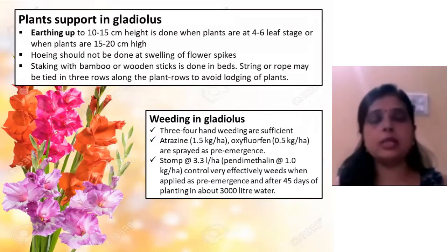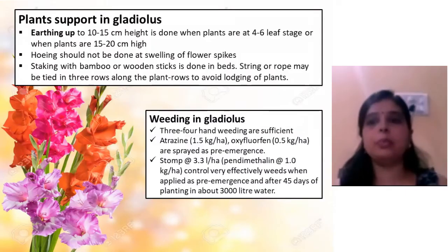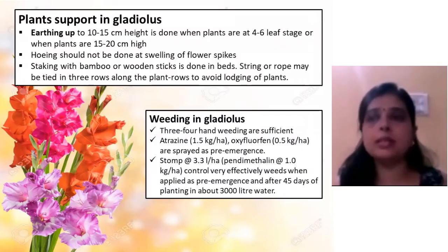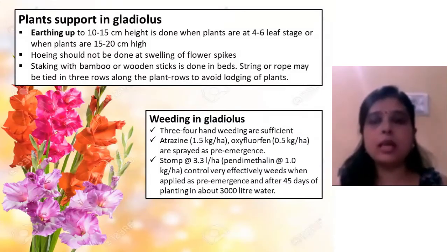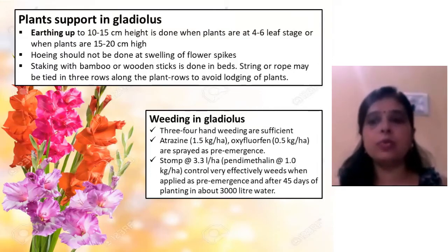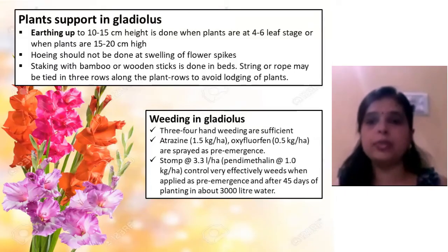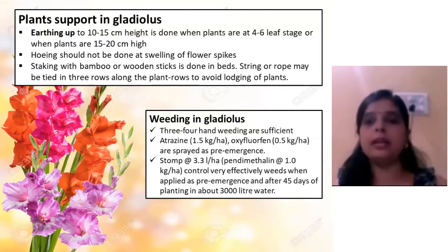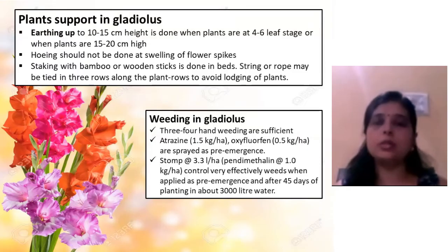Weeding is equally important in gladiolus because weeds compete for nutrients and water. Timely hand weeding is sufficient. Otherwise, you can apply atrazine or oxyfluorfen as pre-emergence herbicides. Pendimethalin also controls weeds very effectively when applied as pre-emergence.